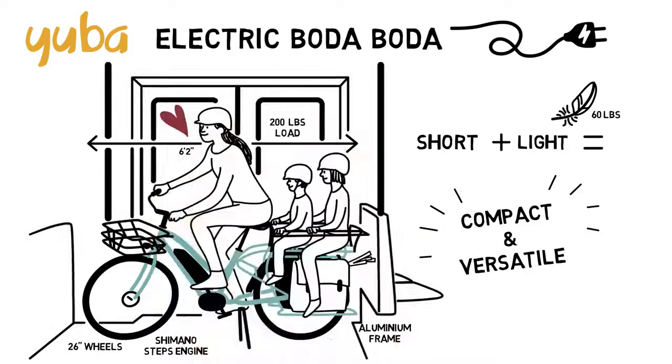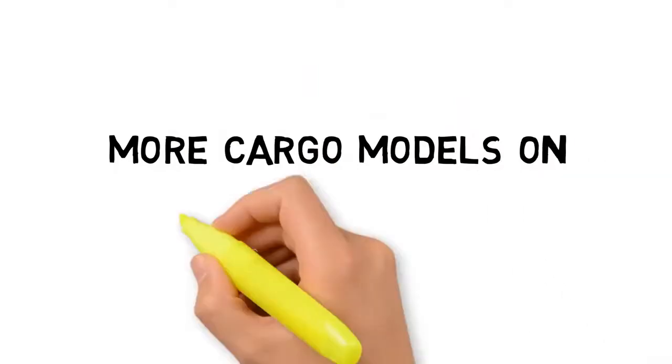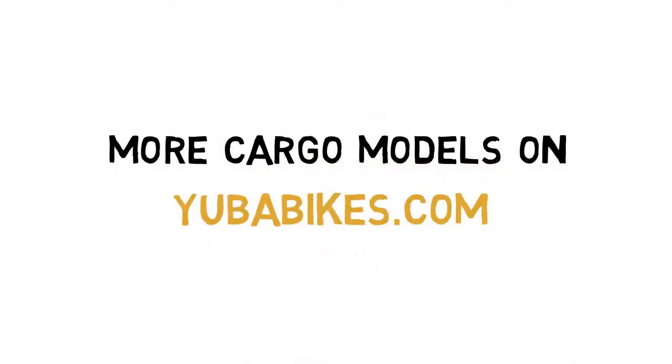In short, I love my Boda Boda. Yuba offers other cargo models for up to four children with or without electric assistance. And to find out more, check out their website at yubabikes.com.